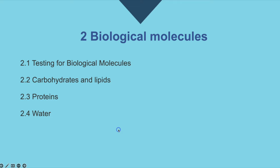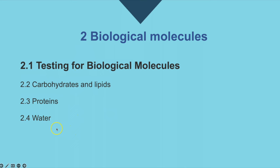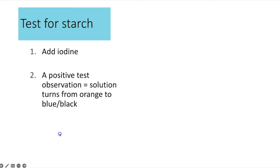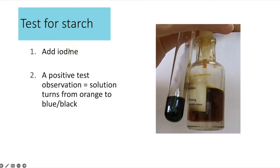Moving on to the topic of biological molecules, which is split into four components, starting with testing for biological molecules. For starch, you add iodine solution, which is orange-brown, and if starch is present it turns blue-black.